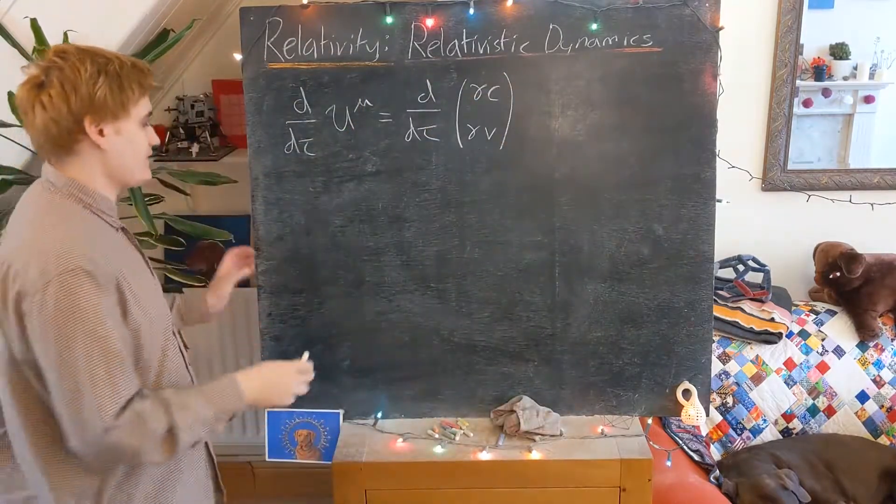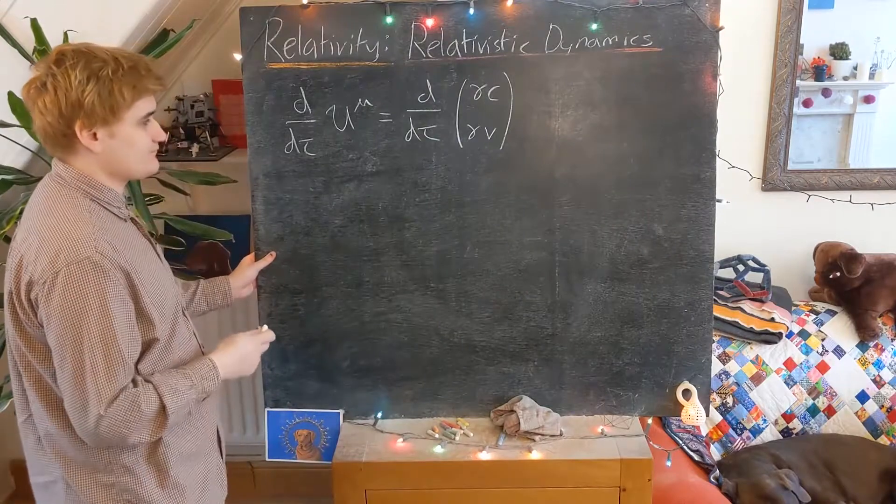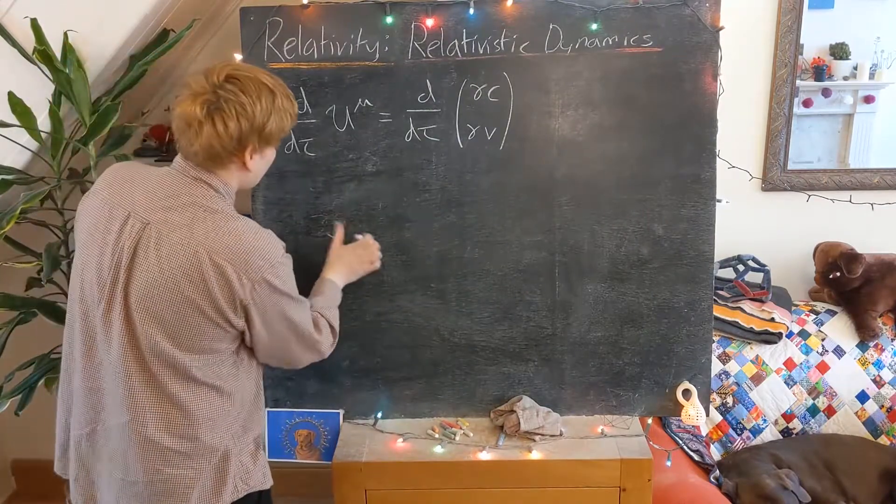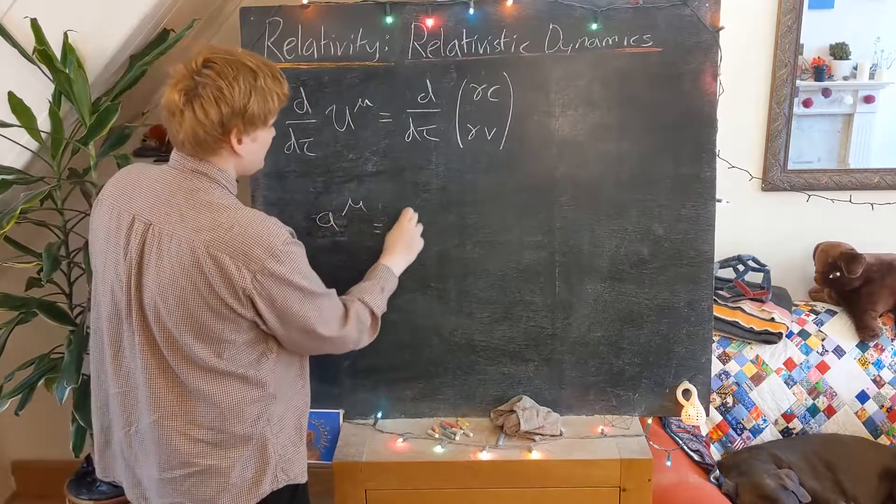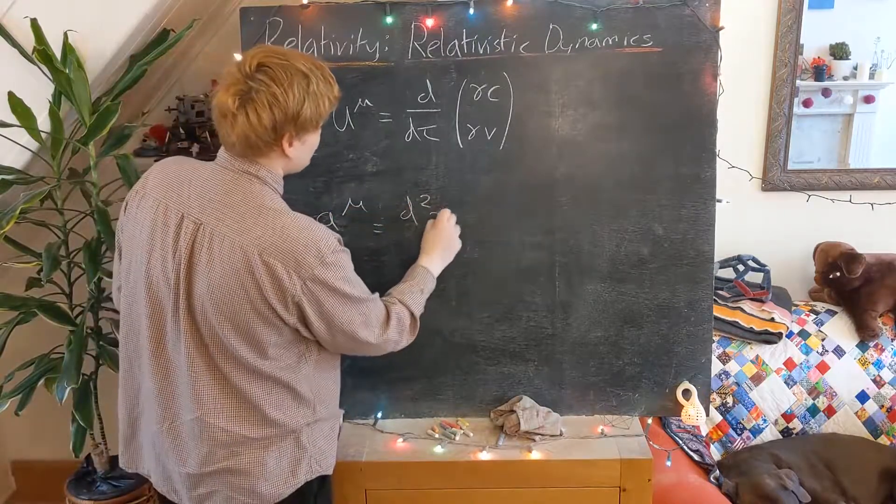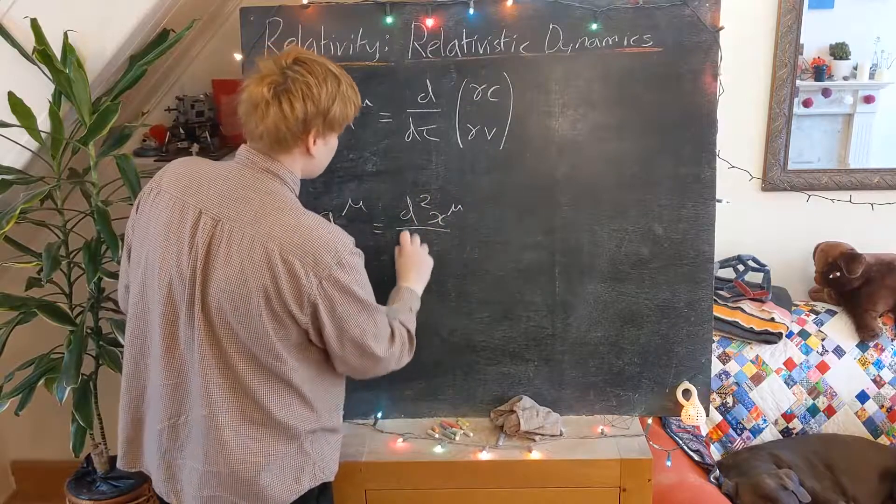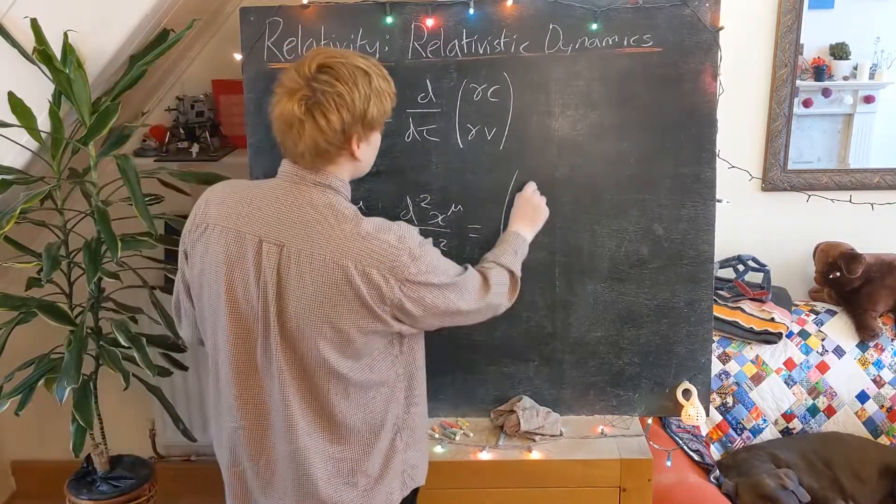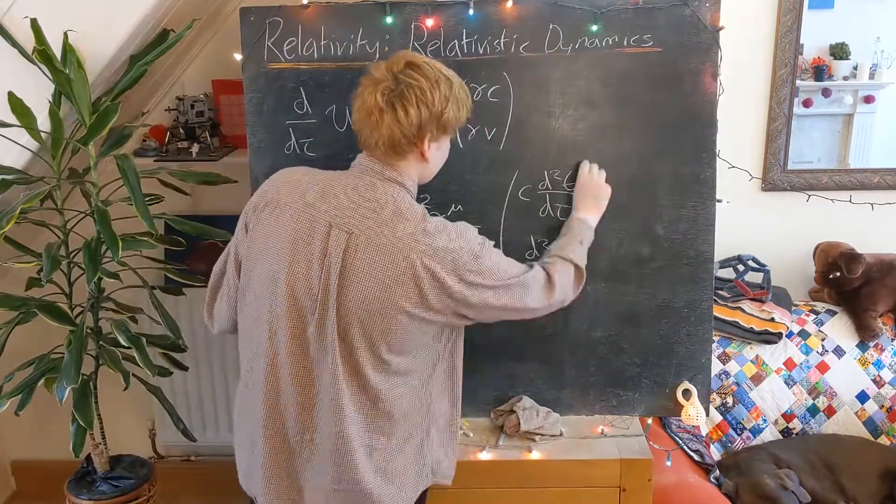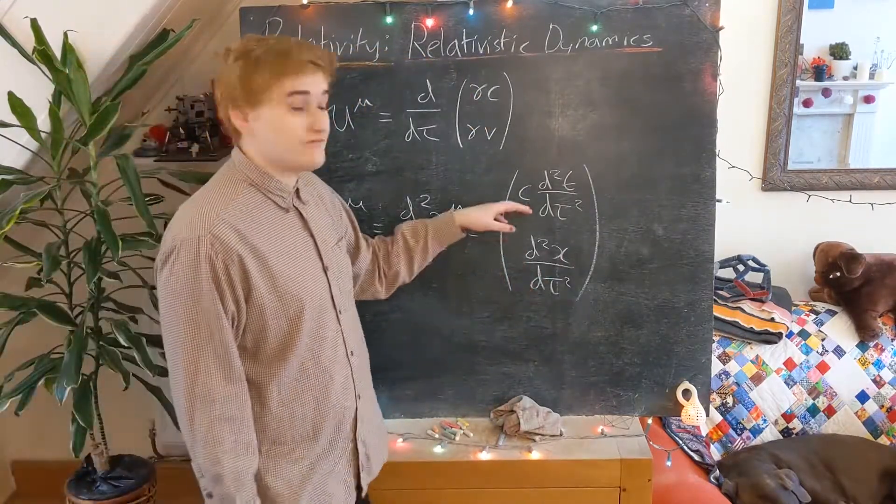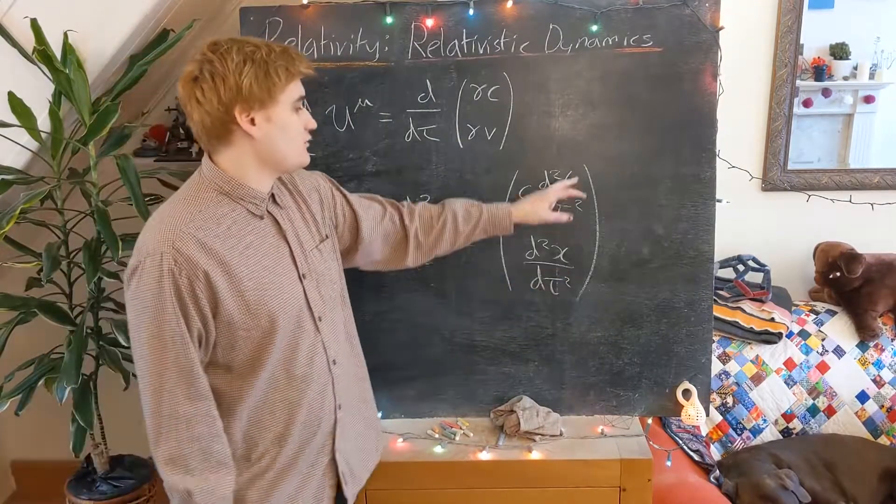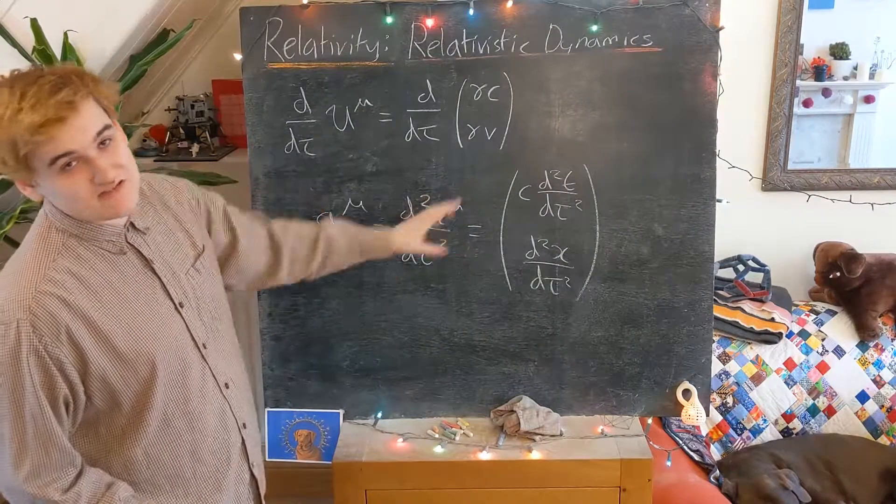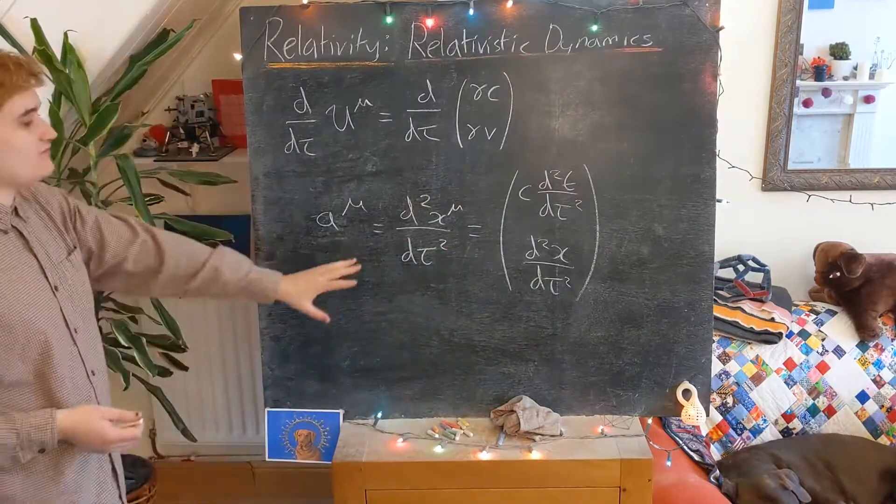But just to be complete, let's say we're going to have that the 4-acceleration is now our second derivative of our world line. And so we can just understand it as the following vector that's kind of just giving us our second derivatives now of our coordinates. And in some sense, this is now kind of representing the curvature of our world line.